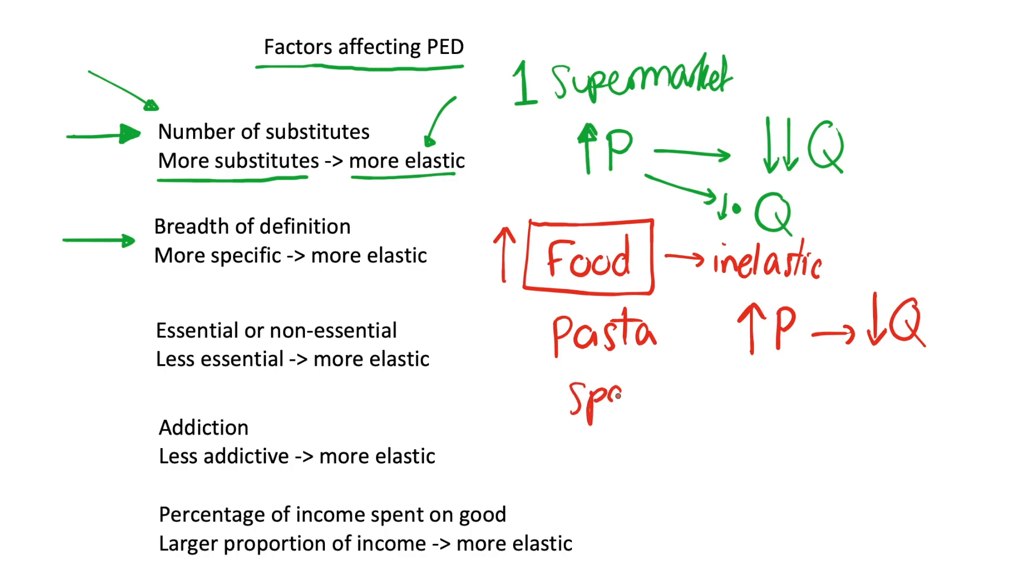And so the quantity demanded of pasta will decrease and we can go even finer into that. Let's say spaghetti. Well, if the price of spaghetti increases, maybe we'll just switch to penne pasta or tagliatelle pasta. And so this will be even more elastic than pasta as a whole sort of definition because we can switch to other pastas within that thing, and there are more close substitutes to that type of pasta. So more specific definition of a good is going to make it more elastic.